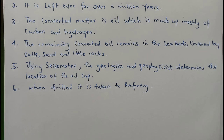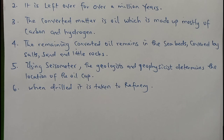In the refineries, crude oil is processed using fractional distillation. This method of separating fractions is based on the boiling points of the fractions, which are very close to one another. Because the boiling points are close to one another, a fractionating column is used to separate fractions that have not yet reached a particular temperature. We will now look at the fractions, their number of carbon atoms, boiling points, and uses.